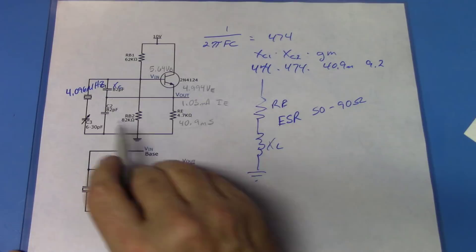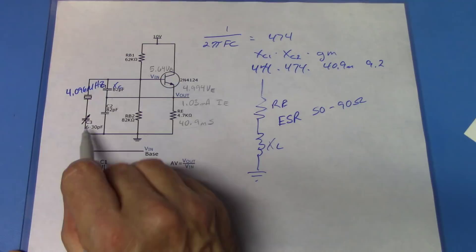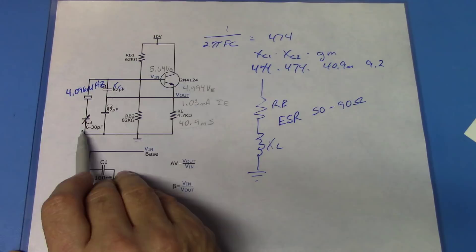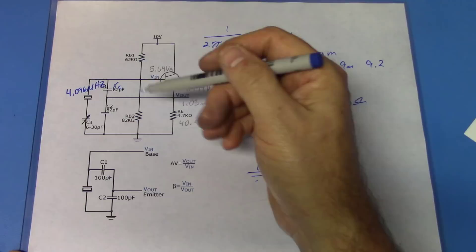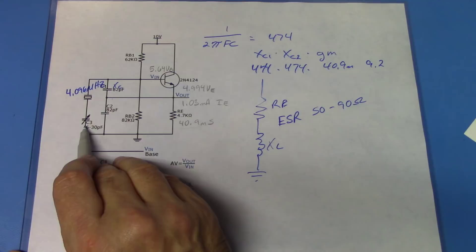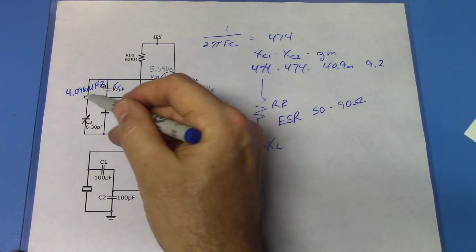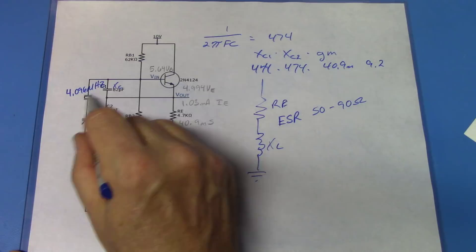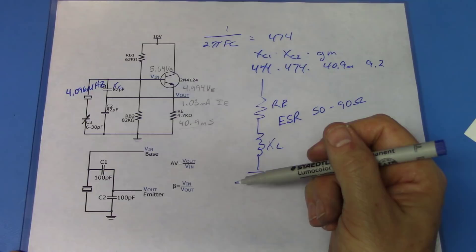Finally, we have a trimmer capacitor in the circuit. This allows us to trim out any error in inductance or capacitance by adding a little XC to the XL, adjusting the frequency right to the target value. Let's put some power in, kick the electrons, and see if we can get this thing to come out at 4.096 megahertz.